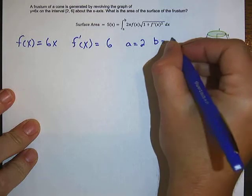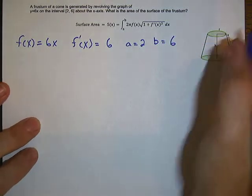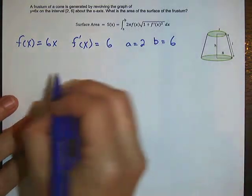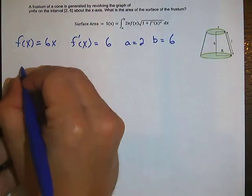and b is going to be 6. So you can see if we plug in these numbers into the function it's always going to be positive so we're able to use this formula. So let's do it.